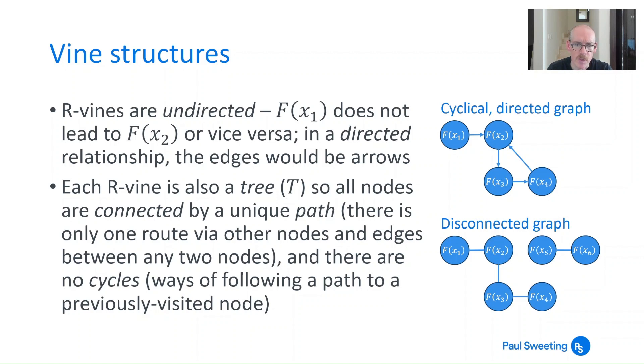Also there are no cycles in a tree or in an R-vine. So there's no way of following a path to get to a previously visited node. So if you go from f(x1) to f(x3) in the bottom graph you've got to go through f(x2). And if you wanted to go back to f(x1) you've got to go back the way you came. Whereas in the top chart you could go from x2 to x3 to x4 then back to x2 again. So that creates a cycle and you can't have cycles in a tree or in an R-vine.